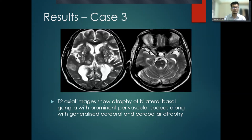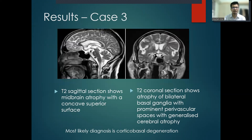T2-weighted images show atrophy of bilateral basal ganglia with prominent perivascular spaces along with generalized cerebral and cerebellar atrophy. T2 sagittal section shows midbrain atrophy with concave superior surface. T2 coronal section shows atrophy of bilateral basal ganglia with prominent perivascular spaces. The most likely diagnosis is corticobasal degeneration.